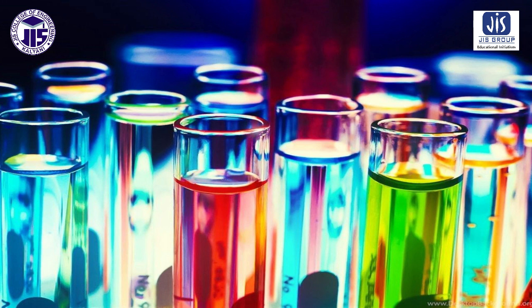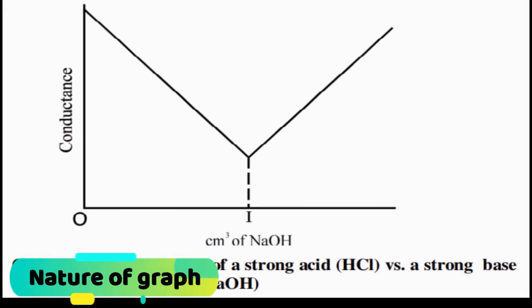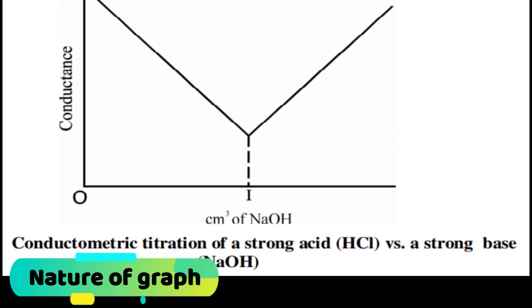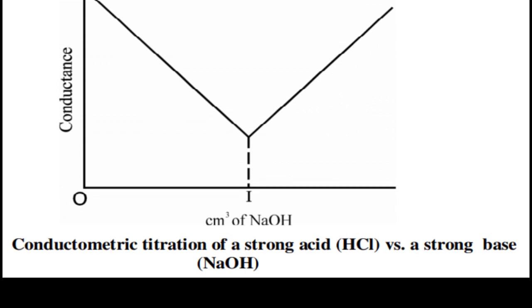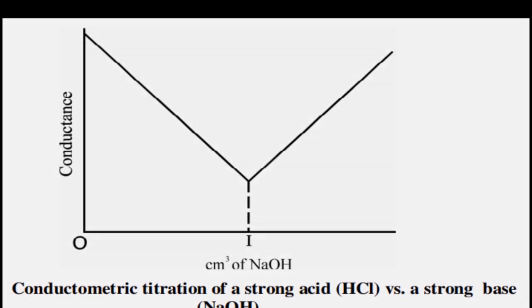After finishing the experiment, you will see that at first the conductance value is much higher, because HCl is a strong acid and its conductance is much higher. Then after adding NaOH, it will gradually decrease. After the neutralization point, it will start increasing again. We then plot the values on a graph and graphically find out the equivalence point of the experiment.